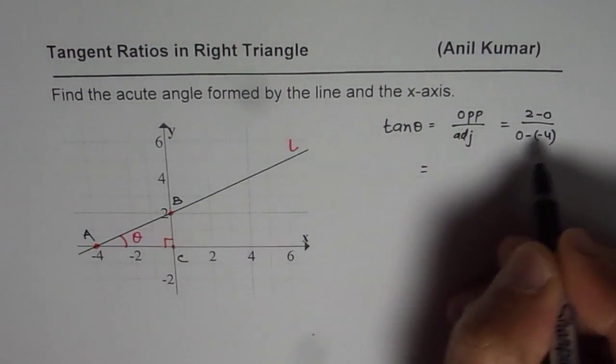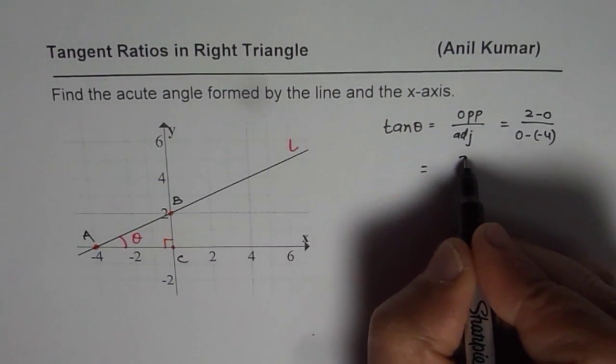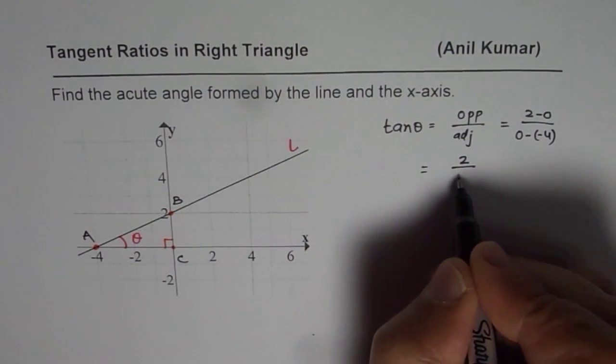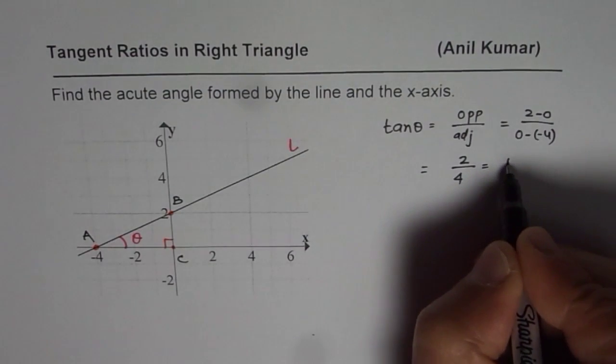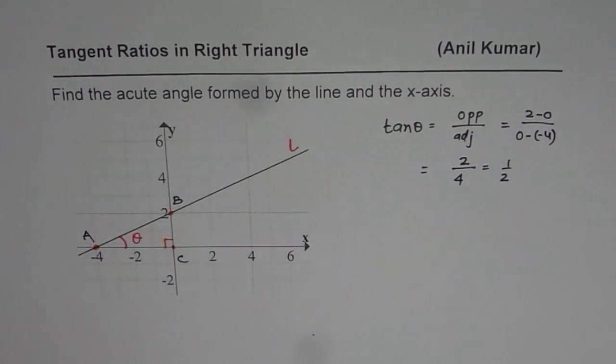Because that reminds you of what? Rise over run, right? So, purposely written like this. So, it is 2 over 4, which is indeed equals to half.